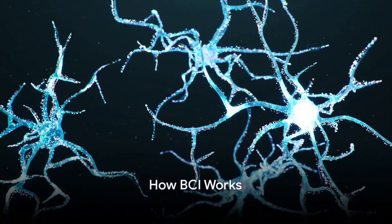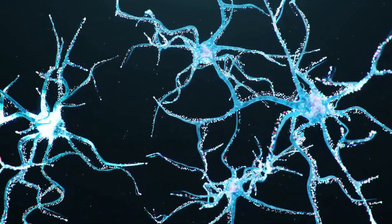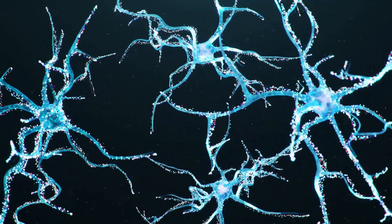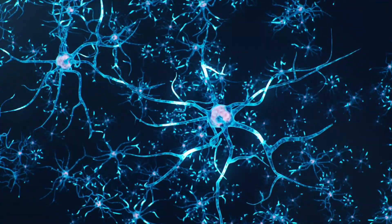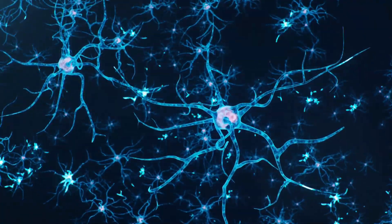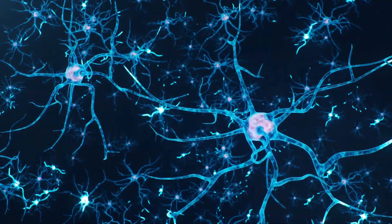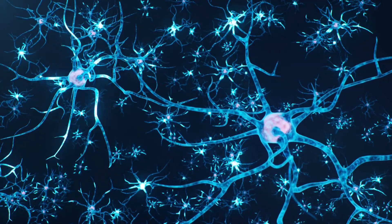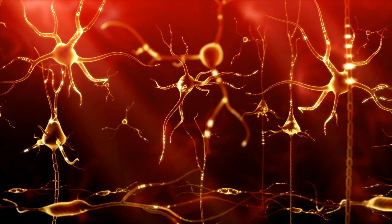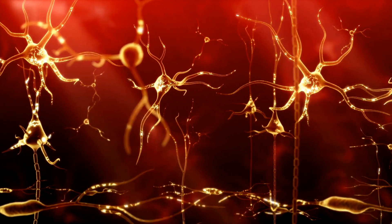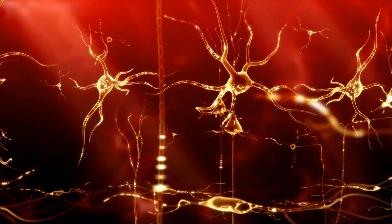To fully appreciate the potential of Neuralink's technology, we first need to understand how brain-computer interfaces work. It's a fascinating journey into the realm of neuroscience and technology, where the mind meets the machine. Your brain is a bustling metropolis of neurons, with millions of electrical impulses zipping around at any given moment. These impulses are the language of the brain, the way it communicates with the rest of your body. Now imagine if we could tap into that language, intercept those messages, and translate them into commands for a computer or other external device. That's the magic of brain-computer interfaces, or BCIs.